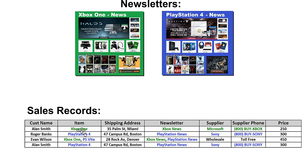There's somebody named Alan Smith — he bought an Xbox One, he lives in Miami, and he subscribed to the Xbox Newsletter. The supplier for the Xbox is Microsoft, their phone number is 1-800-BUY-XBOX, and the price was $2.50. The next person, Roger Banks, bought a PlayStation 4 and lives on Campus Road in Boston. He subscribed for the PlayStation News, supplied by Sony, and the price was $300. The next person, Evan Wilson, bought an Xbox One and a PlayStation Vita. He lives in Denver, subscribed to both newsletters, but the supplier field says 'wholesale' and the phone number says 'toll free,' and the total price was $4.50.